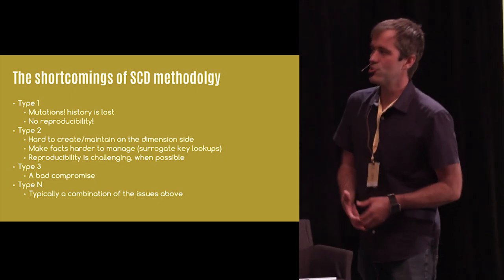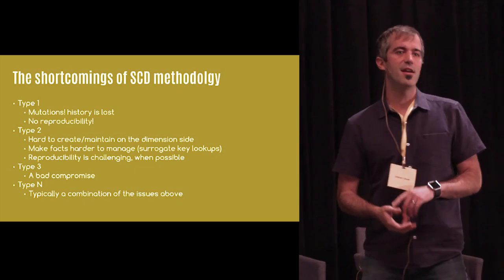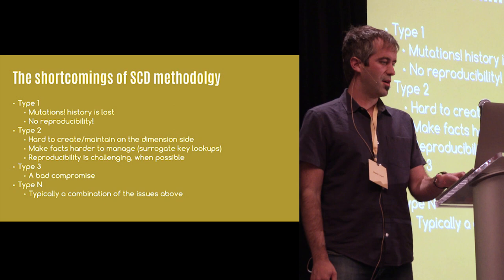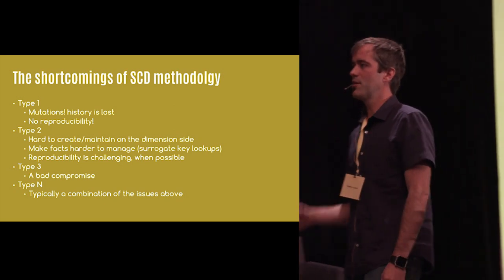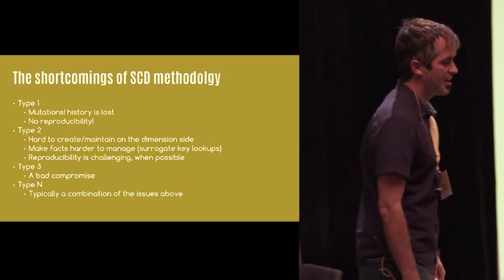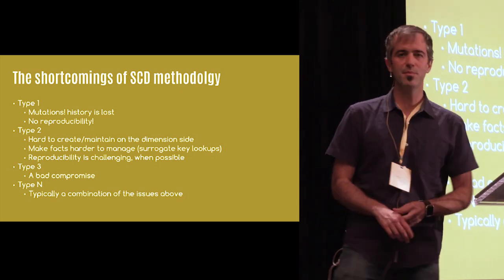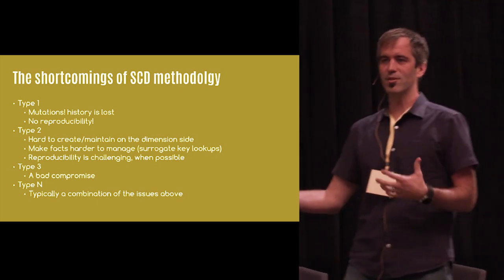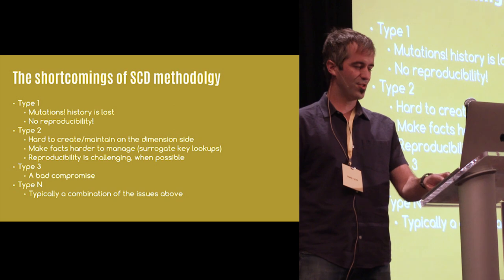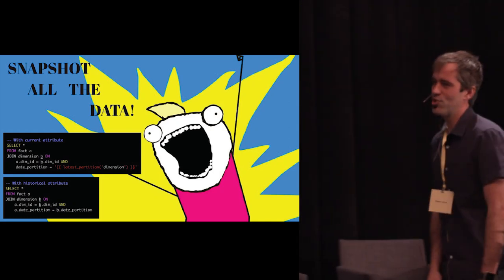Type 2 is effectively super hard to manage — it makes loading dimensions and facts harder and forces you to do lots of upserts and complex ETL. It's also not guaranteed that you can fall back to the exact state if you wipe the dimension table and try to rebuild. Type 3 is a bad compromise. All of these types have shortcomings that the functional approach addresses.